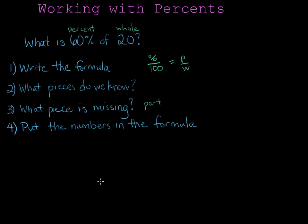Now let's put the numbers in the formula. 60 is the percent, so it goes over 100. The part we don't know, so I'm going to leave that as P. And the whole is 20.